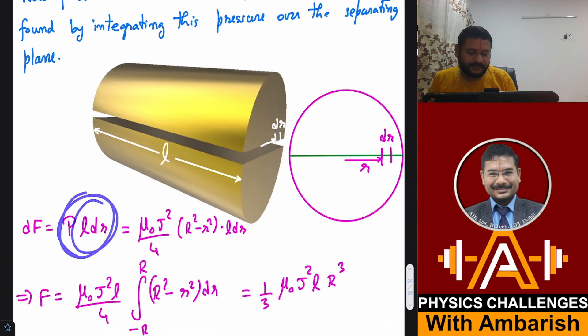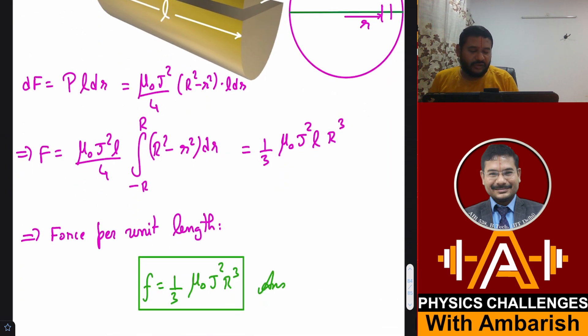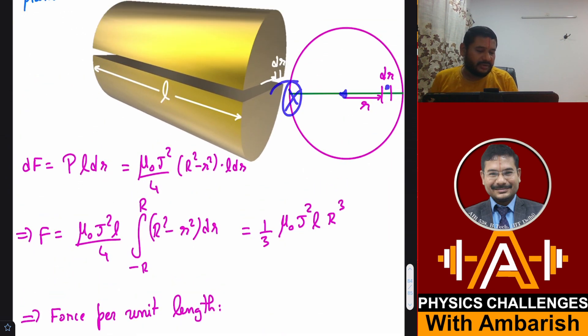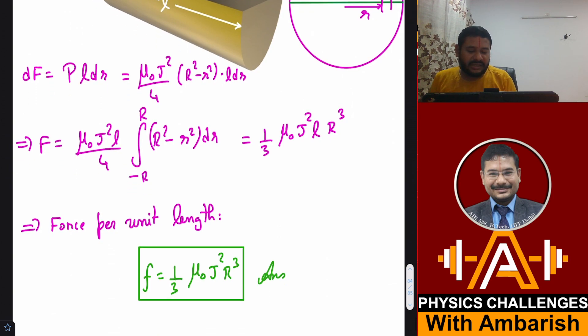Force between the two semi-cylinders is found by integrating pressure over the separating plane. The attraction force is balanced by hydrostatic pressure forces, so magnetic force equals hydrostatic force. dF is pressure into L dr. Substitute pressure mu naught J squared by 4 times capital R squared minus small r squared, and integrate from minus R to capital R. This gives the expression, divide by L for force per unit length, one third mu naught pi J squared R cubed. We're happy our answer matches.